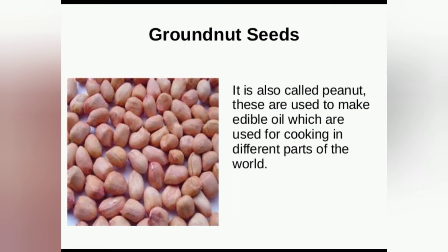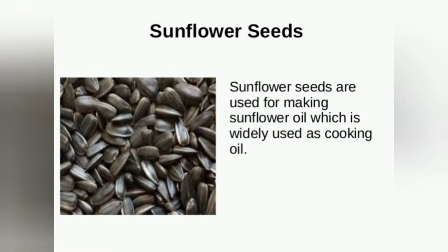Groundnut seeds, also called peanuts: these are used to make edible oil which is used for cooking in different parts of the world. Sunflower seeds are also used for making sunflower oil, which is widely used as a cooking oil.